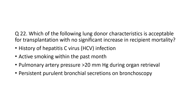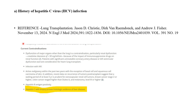Next question: which lung donor characteristic is acceptable for transplantation with no significant increase in recipient mortality? The answer is hepatitis C virus infection history in the past. From the latest lung transplantation guidelines, active hepatitis C with biopsy-proven histological evidence of liver disease is the actual contraindication — not a prior history of hepatitis C.